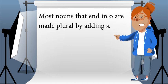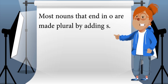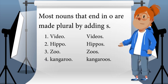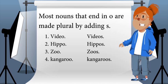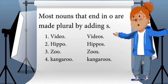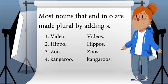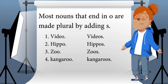Most nouns that end in o are made plural by adding s. Video becomes videos, hippo becomes hippos, zoo becomes zoos, kangaroo becomes kangaroos.